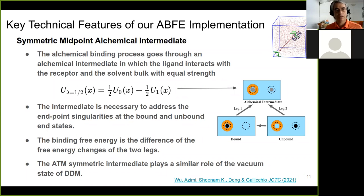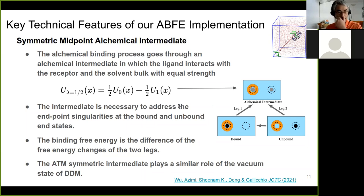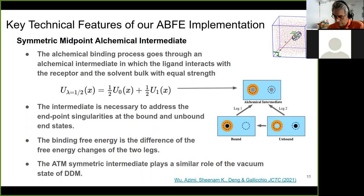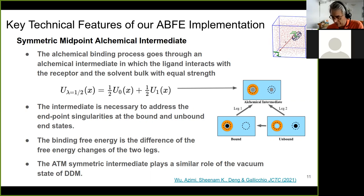There is an intermediate. It turns out we cannot go directly from the bound state to the unbound state. We have a thermodynamic cycle that connects the bound and unbound state to a common alchemical intermediate — a state in which the ligand interacts at 50% strength in the binding site and in the bulk water. The absolute binding free energy is obtained by taking the difference of those two free energy changes going to this alchemical intermediate. Just like in double decoupling, there is an alchemical intermediate. The important point is that this alchemical intermediate is not the vacuum state, and I think that is a benefit of this approach.